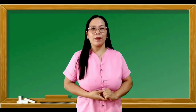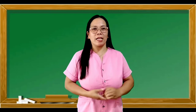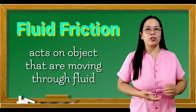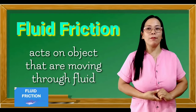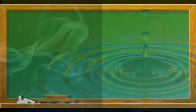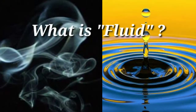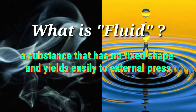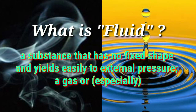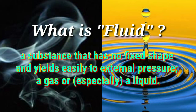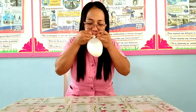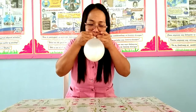The fourth type of friction is fluid friction. Fluid friction acts on objects that are moving through fluid. For example, the air occupies the space of the balloon.